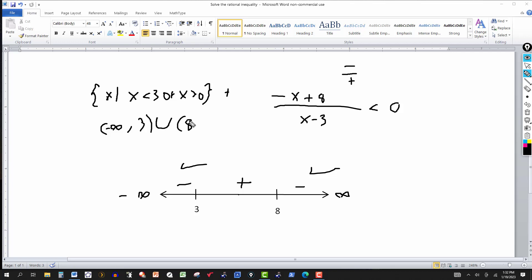And then here we put the union. So it's everything less than 3, and the union, of course, corresponds to the or here, union everything greater than 8. Now if this had been an equals here, then we'd have a bracket here. But in this case, those are the ways to write the solution.